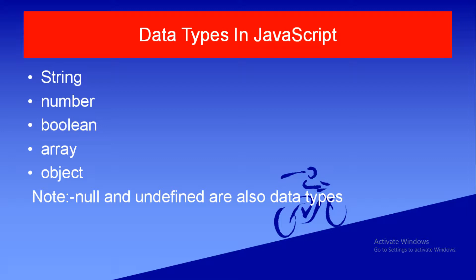First of all, we have to know what data types are. Data types are the types of data in JavaScript. There are so many types of data in JavaScript and you can give data a type — this is known as data types. In other words, data types are the classifications of data. In JavaScript we have string, number, boolean, array, object data types, and also null and undefined.